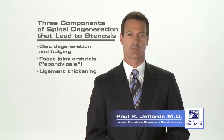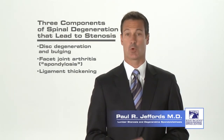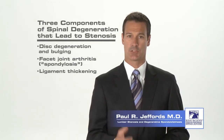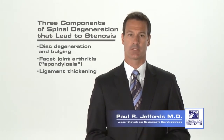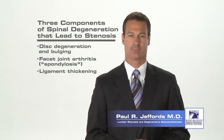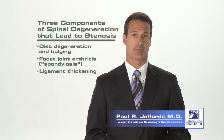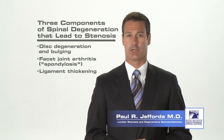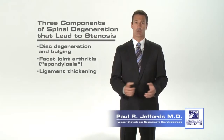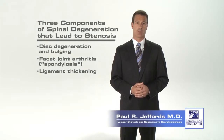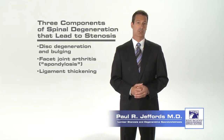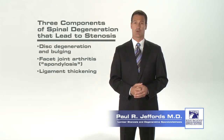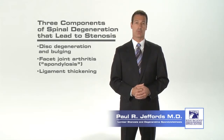As we age, our discs will slowly begin to degenerate or wear out. This process usually begins in our 30s and is part of the normal aging process, just like our hair turning gray. This process happens in all of us, but in some people it may progress at a faster rate or start at an earlier age. As this occurs, the disc starts to dry out and slowly shrinks and flattens. The outer wall of the disc will eventually start to bulge and may impinge on the spinal nerves within the spinal canal or the nerves exiting through the foramen.